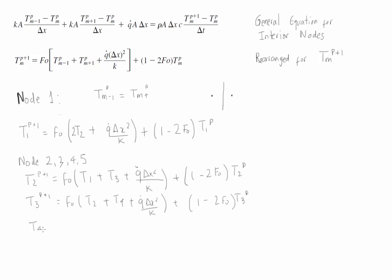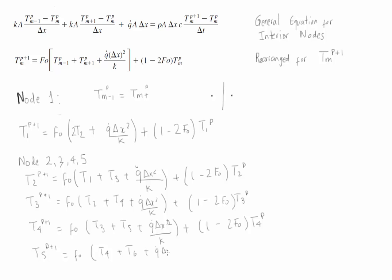For node 4, T4 at P+1 equals the Fourier number times (T3 plus T5), plus Q-dot times Δx² divided by k, plus (1 minus 2 times the Fourier number) times T4 at P. For node 5, T5 at P+1 equals the Fourier number times (T4 plus T6), plus Q-dot times Δx² divided by k, plus (1 minus 2 times the Fourier number) times T5 at P.